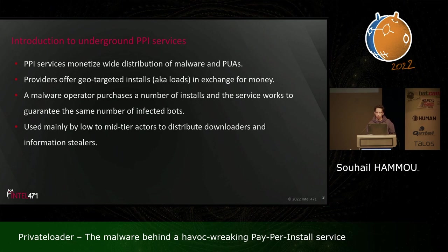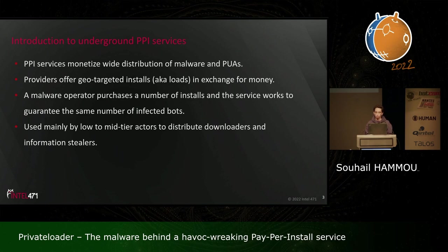Pay-Per-Install services allow monetization of wide distribution of malware and potentially unwanted applications. These providers offer malware operators a way to offload malware distribution to them, with options like geo-targeted installs purchased in exchange for cryptocurrency. These services are mainly used by low-to-mid-tier actors to distribute commodity malware like downloaders, info stealers, and remote access trojans, though there are some exceptions we'll look at in this talk.